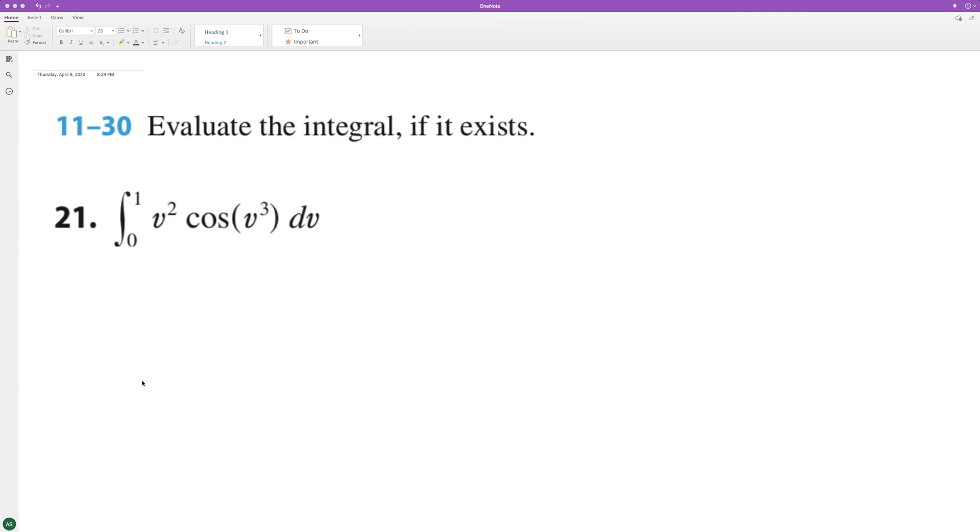To integrate the following from 0 to 1, we can use u-substitution. We'll set u equal to v cubed, and du is going to be equal to 3v squared dv.